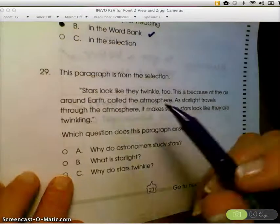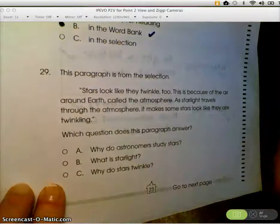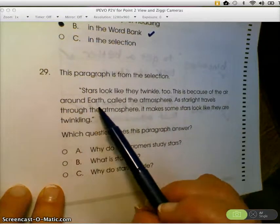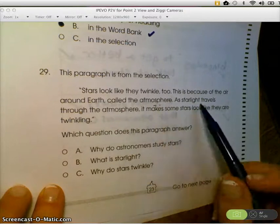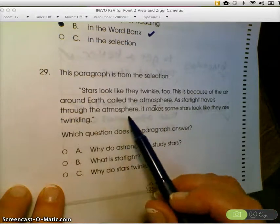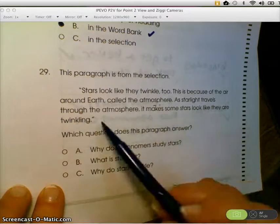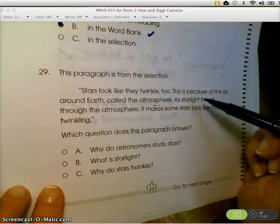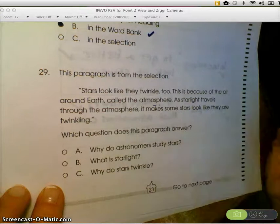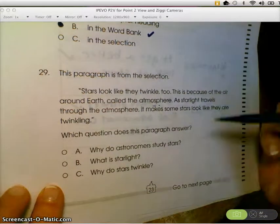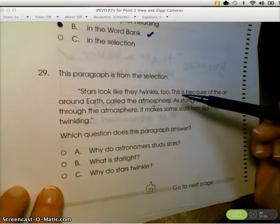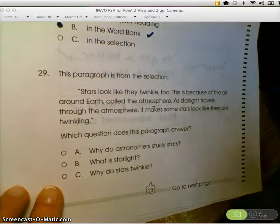29. This paragraph is from the selection. Stars look like they twinkle too. This is because of the air around the Earth called the atmosphere. As starlight travels through the atmosphere, it makes some stars look like they are twinkling. Which question does this paragraph answer? Oh, I get it. This is the answer. Here are the three possible questions. So sometimes you might want to read this to yourself again, because when you were reading it you didn't know it was an answer. So now we know. That's an answer.